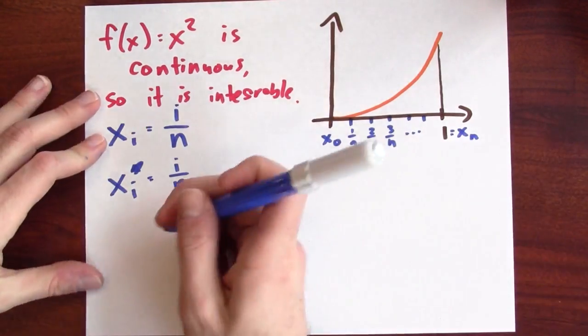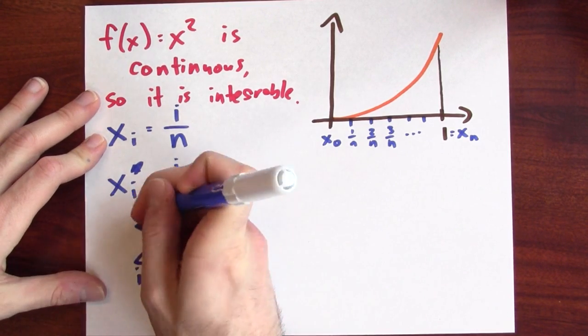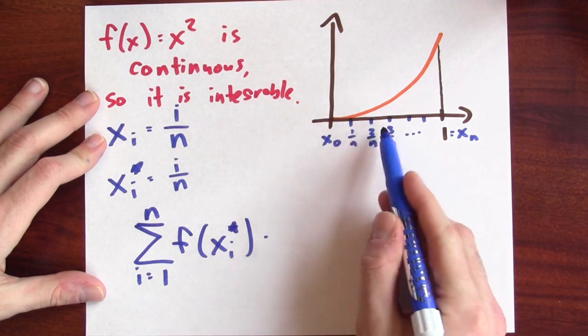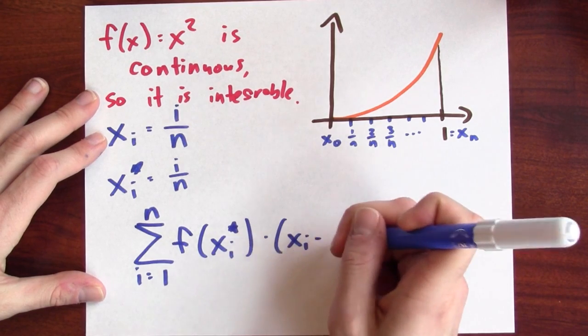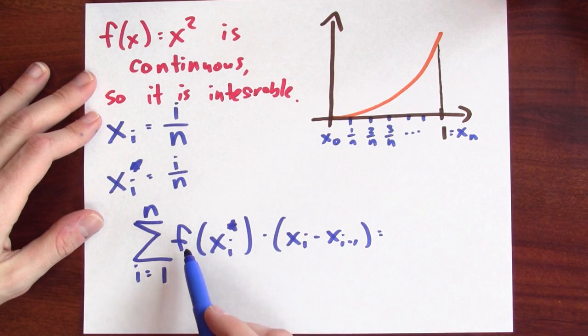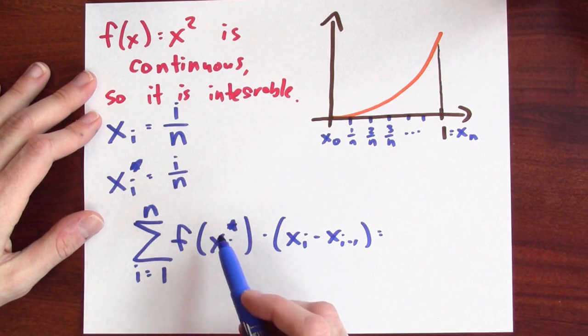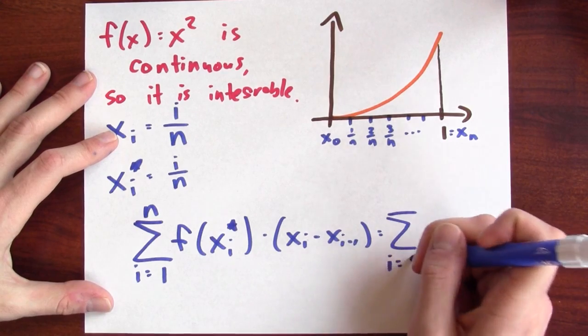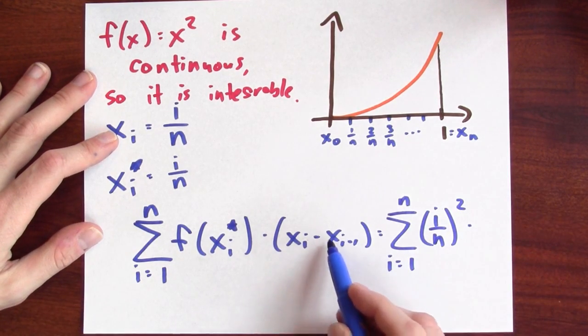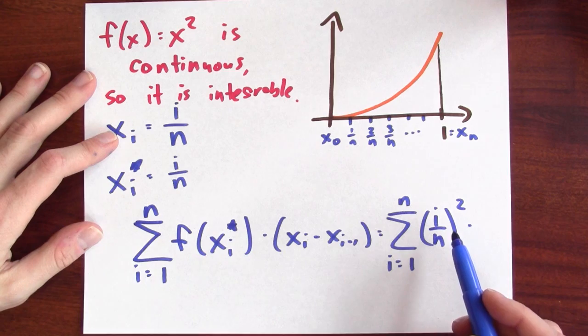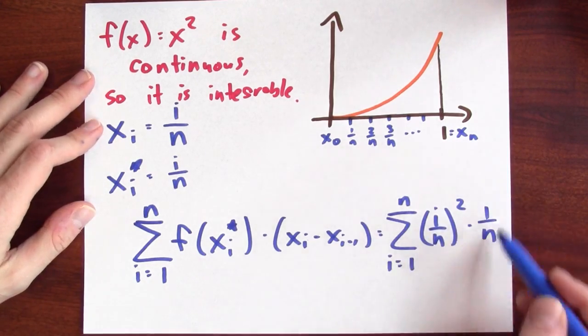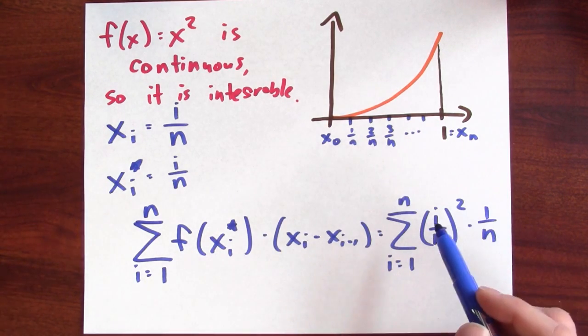Now I can write down the Riemann sum. The Riemann sum is the sum, i goes from 1 to n, the function evaluated at the sample point times the width of this ith interval, which I could write as x sub i minus x sub i minus 1. In this case, I can rewrite this Riemann sum as i over n squared times x sub i minus x sub i minus 1. That's just the width of the ith subinterval in my partition, and that's 1 over n. So there is my Riemann sum associated to this particular partition and my particular choice of sample point.